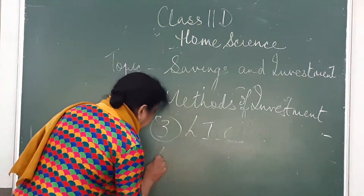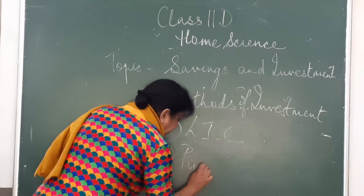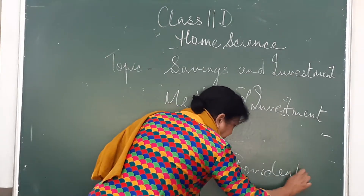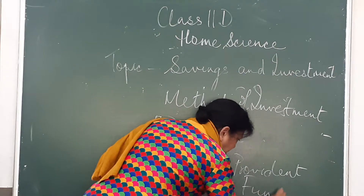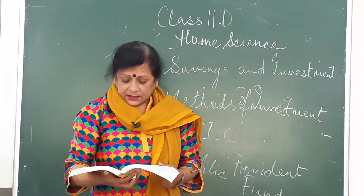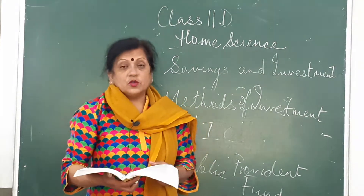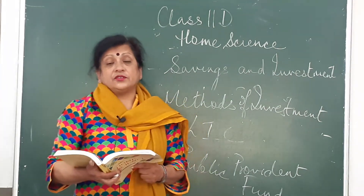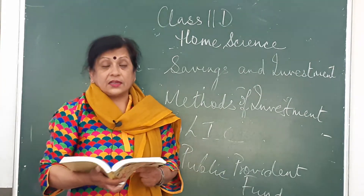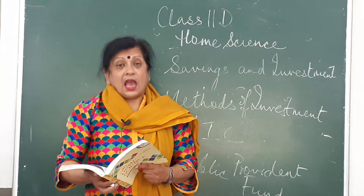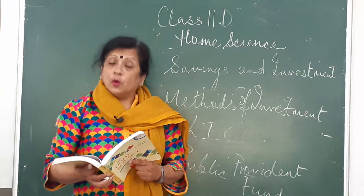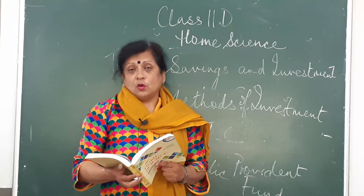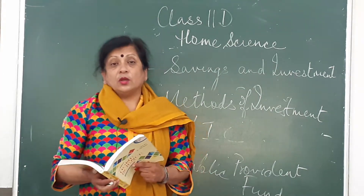People also have another form of investment — the public provident fund account. Many post offices and banks have this type of account. When people retire from service, they get a lump sum amount of money which has been deducted from the salary — we call it provident fund — in which both the employee and the employer have contributed. The sum grows over the years, and the lump sum amount is given to the employee on retirement.